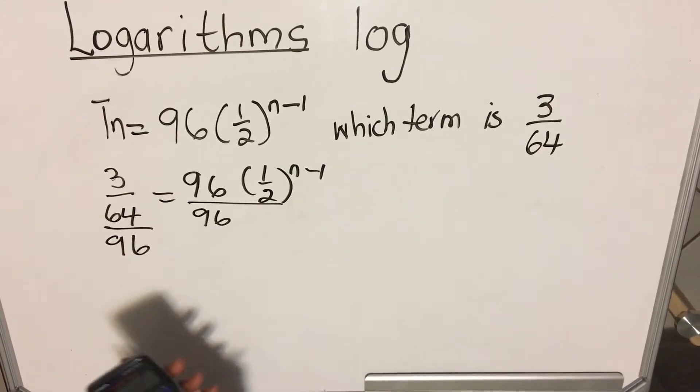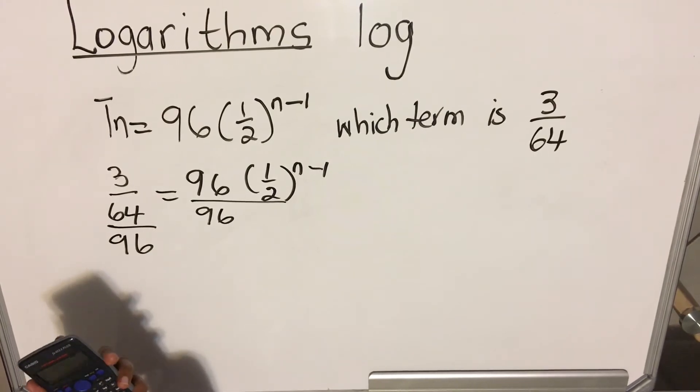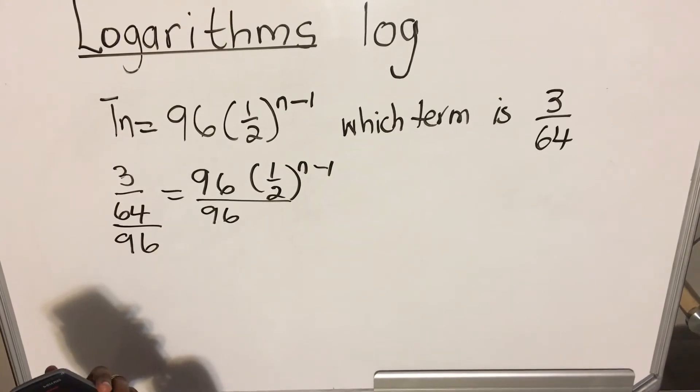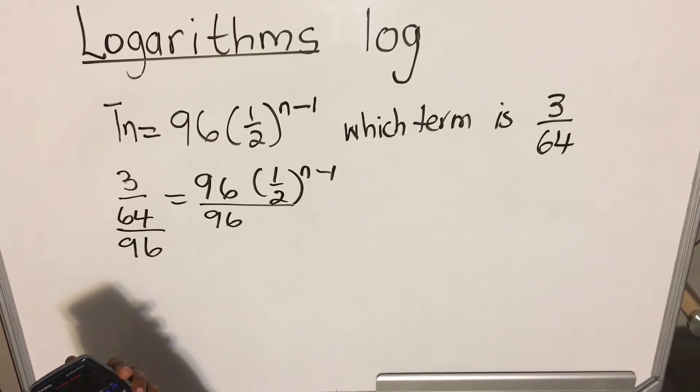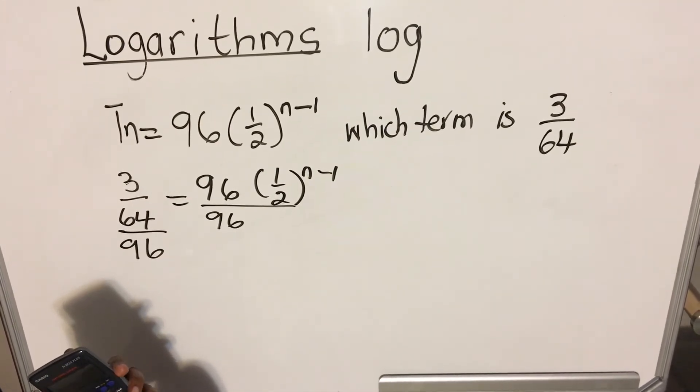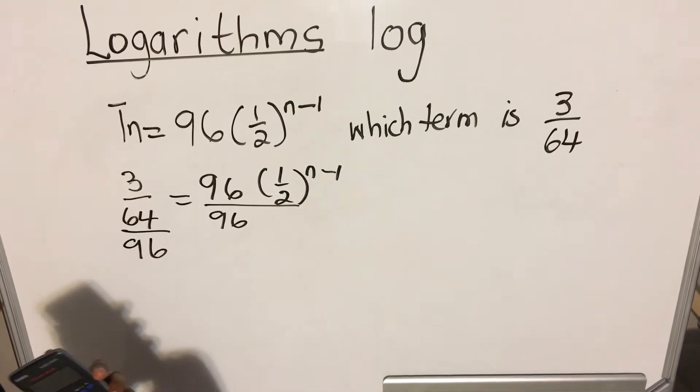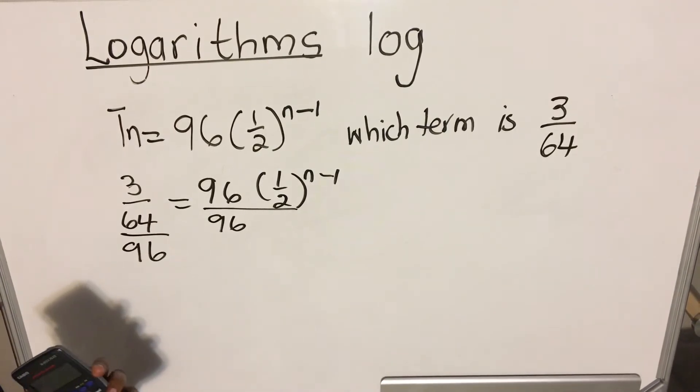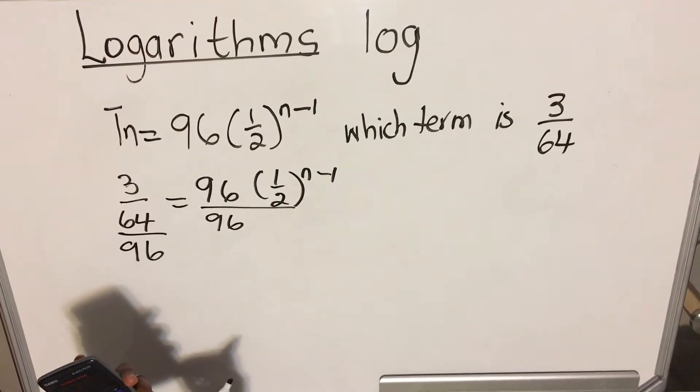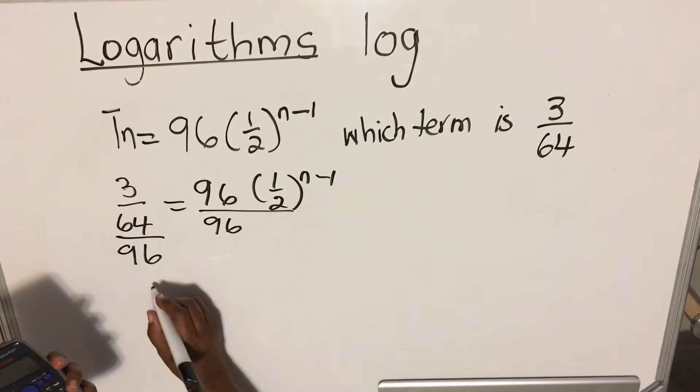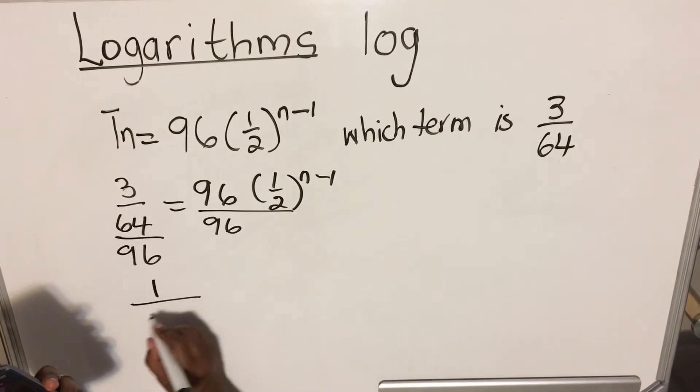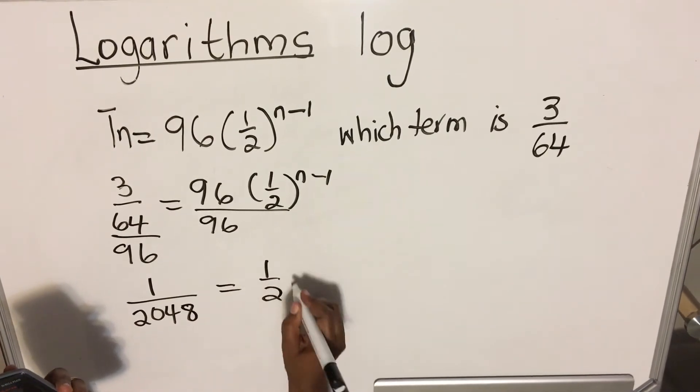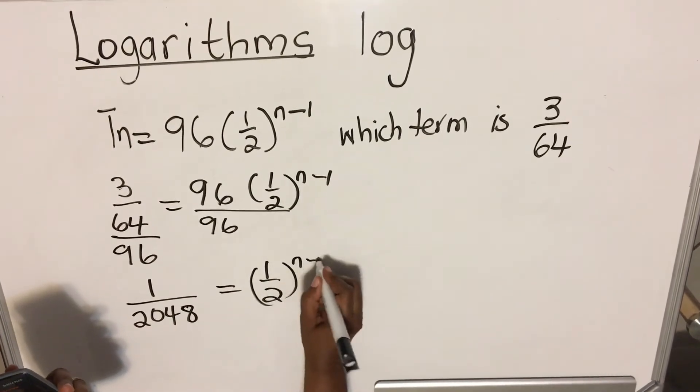So you remember that we divide by 96 both sides. We're going to have 3 over 64 divided by 96. And then we get that it's 1 over 2048. This equals 1 over 2 to the power n minus 1.